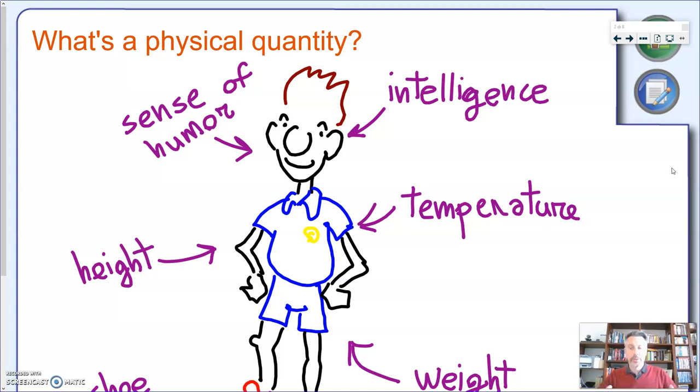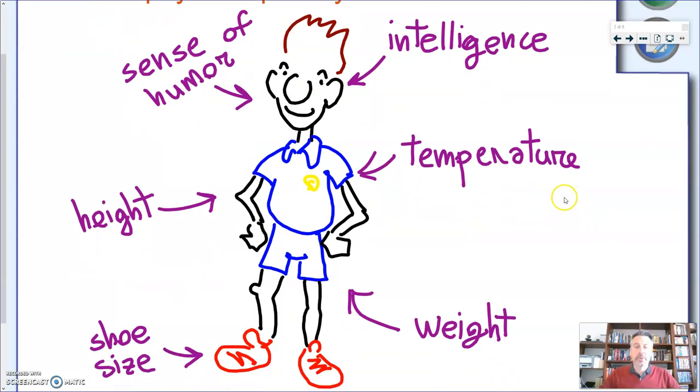So let's look at a description of a person. Now if you want to describe the physical appearance or the general appearance of this person, you might refer to things like this person's intelligence, its sense of humor, the height, the temperature, the body temperature of this person, the shoe size, and the weight.